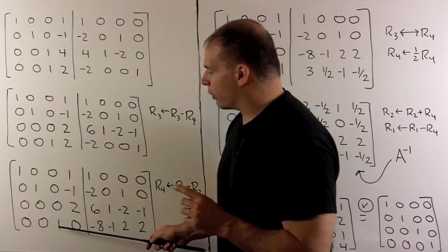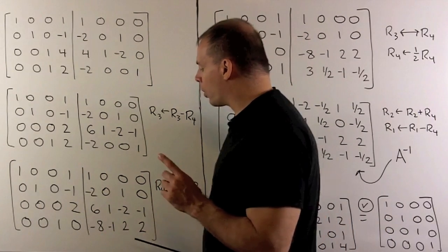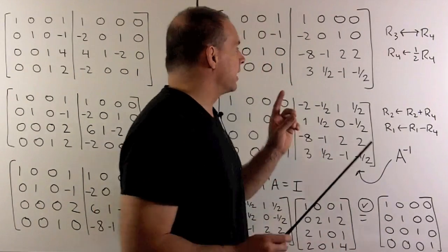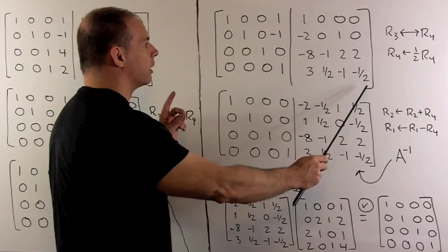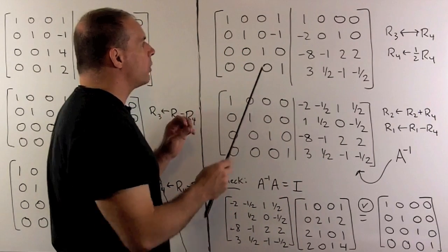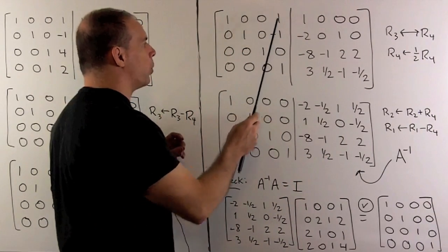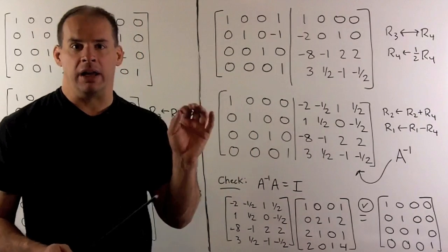Now I can switch row three and row four, divide the new row four by two, and that gets us to this step here. So all I need to do now is to eliminate this minus one and this one, then we'll have our A inverse.